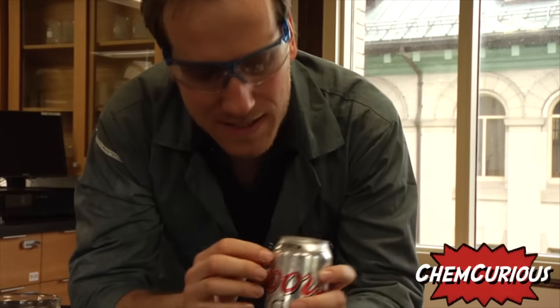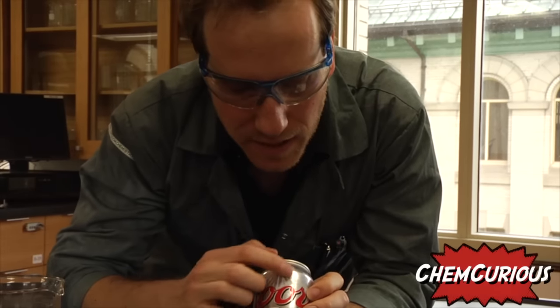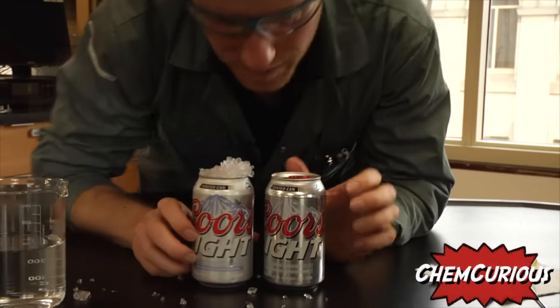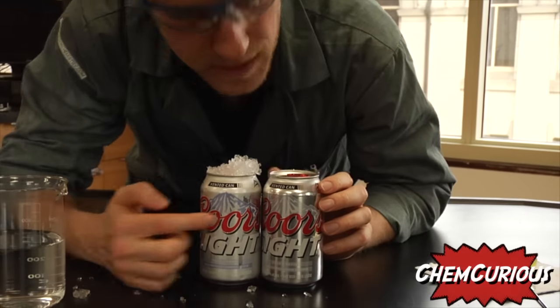So Coors Light has this design here that the mountain changes color whenever your beer is cold and whenever your beer is warm. So here's a warm beer—you can kind of see here the gray design. And here we have a cold beer. You see the difference in color? Same principle.